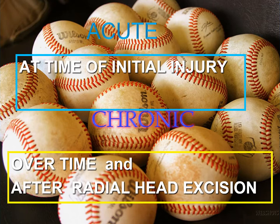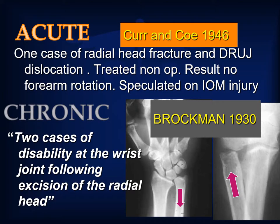We now recognize two scenarios of longitudinal instability: one, acute, that occurs at the time of the initial injury; and two, chronic, which occurs over time and only after radial head excision. The first description of the acute injury is not that of Essex-Lepresti but occurred five years earlier by Kerr and colleagues, who reported on one case of radial head fracture and distal radial ulnar joint dislocation. The patient was treated non-operatively with the result of complete loss of forearm rotation, and their paper speculated on interosseous membrane injury.